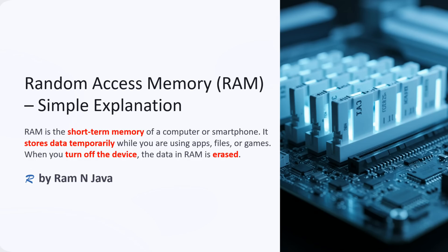In this video tutorial I will explain what is Random Access Memory or RAM. RAM is the short-term memory of the computer or smartphone. It stores data temporarily while you are using apps, files or games. When you turn off the device, the data in the RAM is erased.